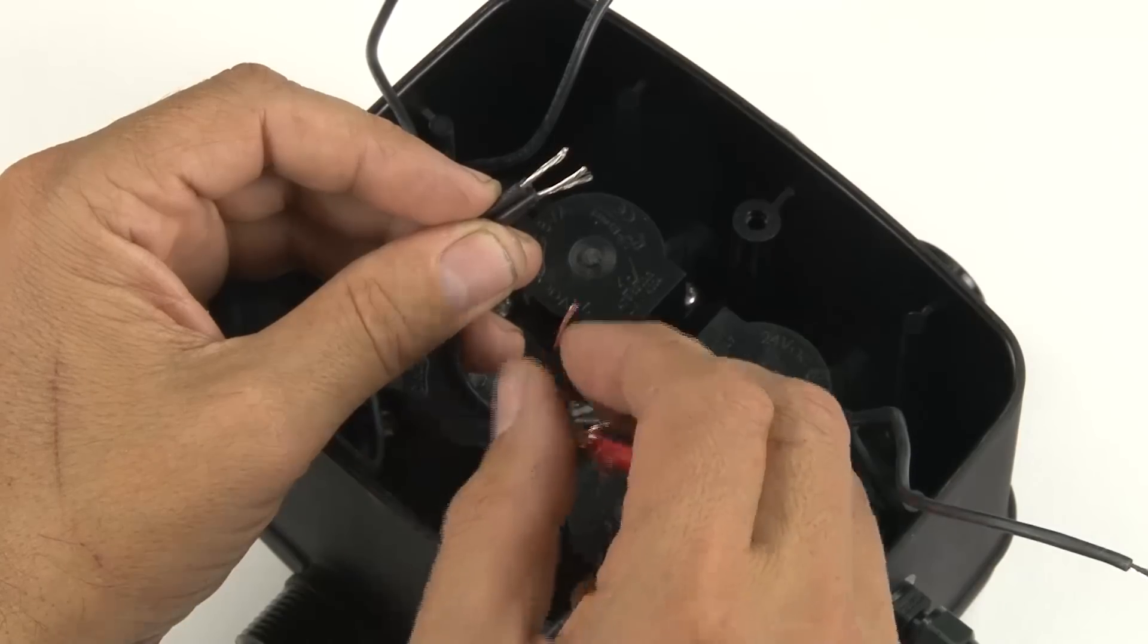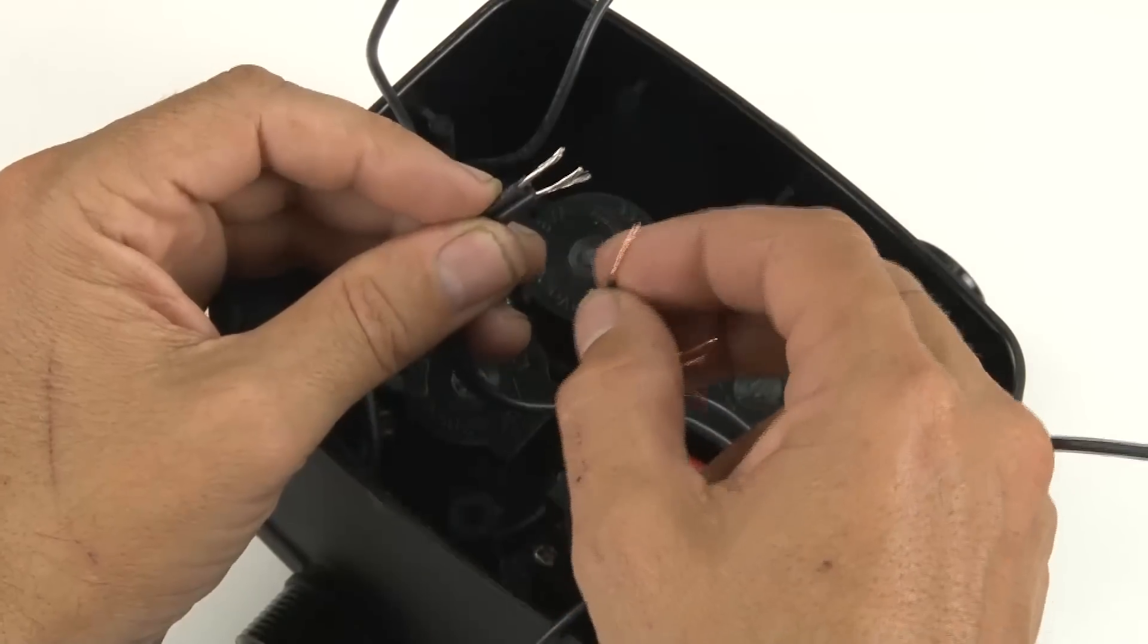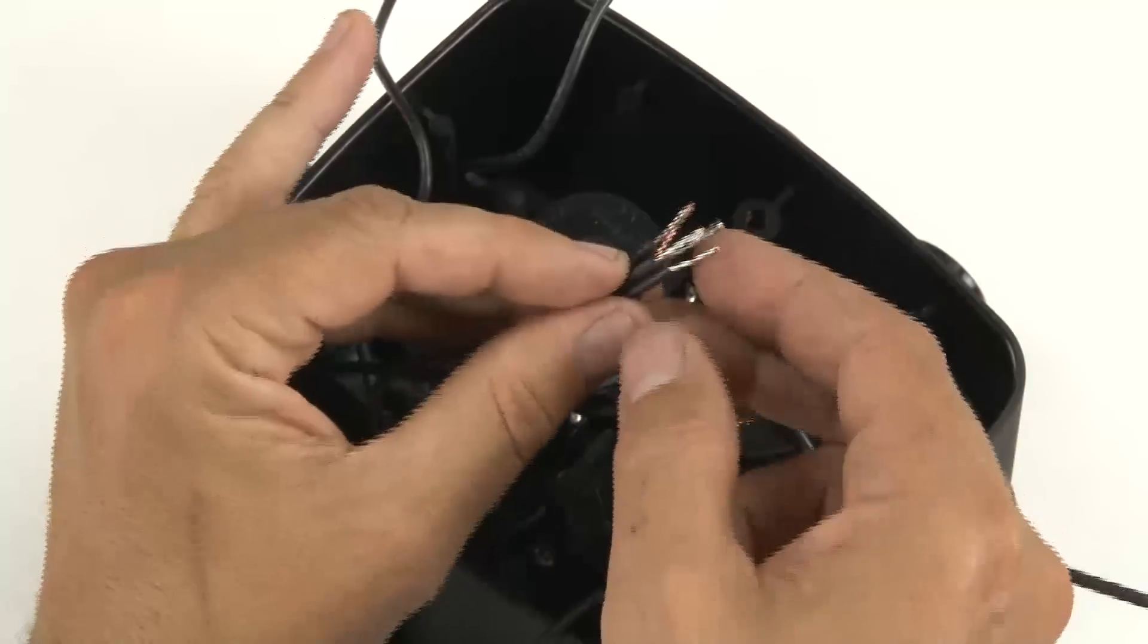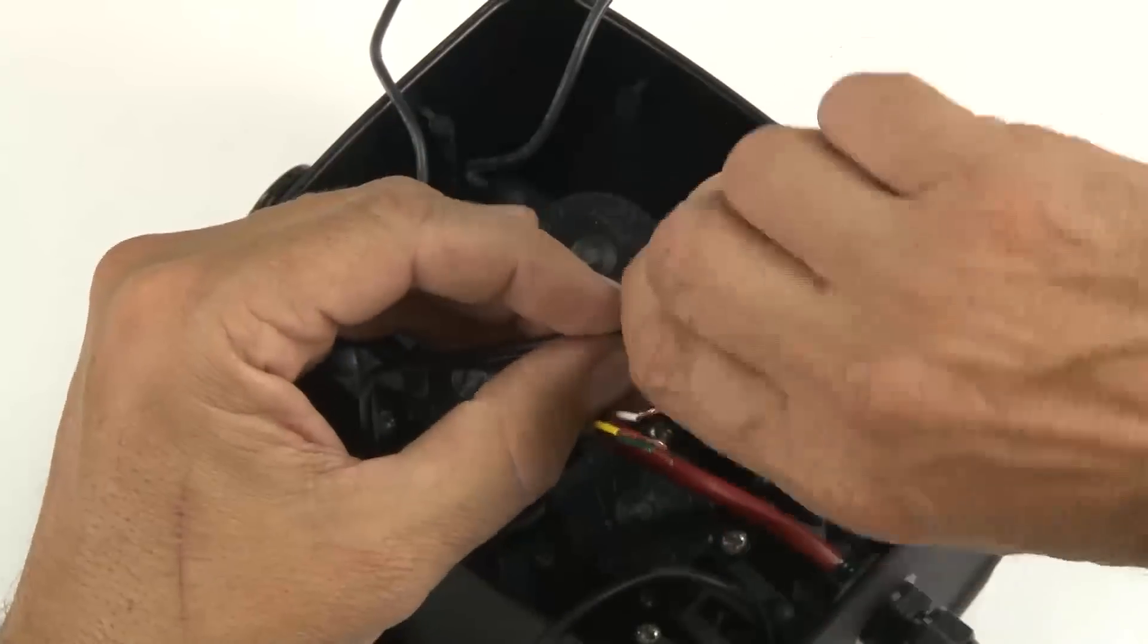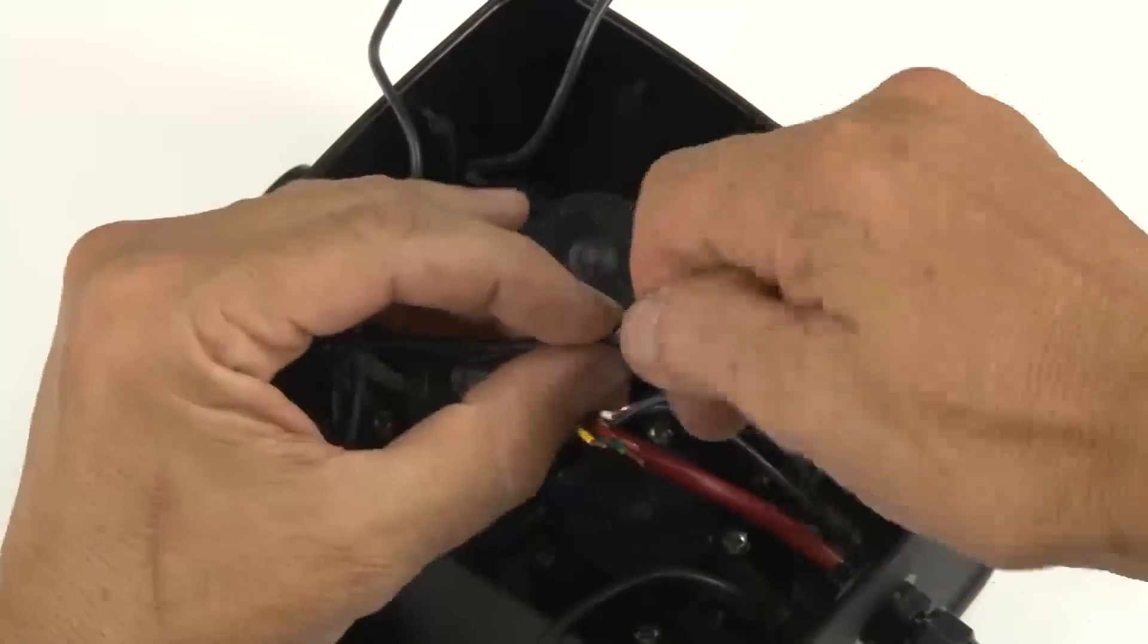Next, select the common wire from your cable. In some countries, the common wire is white, but in Australia, it's black. Bunch all these wires together and give them a twist.